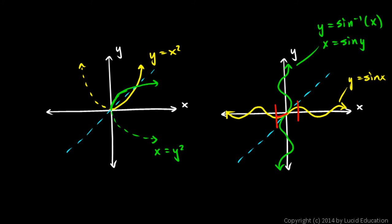From here to here — just this little piece, highlighted from this trough right here to that peak right there. If we just look at that section of the curve, then when we invert it, we would be looking at this piece — this section of the inverse sine — which would still be a function and would still pass the vertical line test. But if you graph the entire curve and reflect it, you get x equals sine y and y equals sine x, just like that.